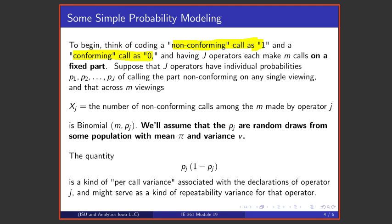We're going to suppose that these operators have potentially different probabilities of calling the part non-conforming on any single viewing.